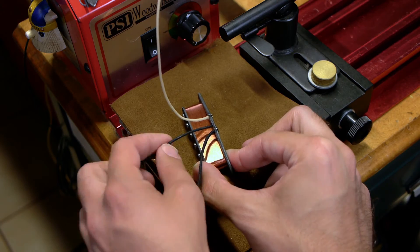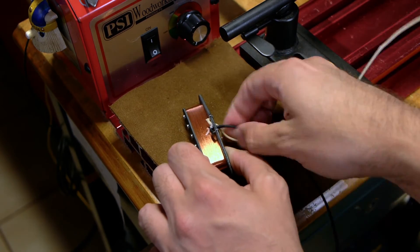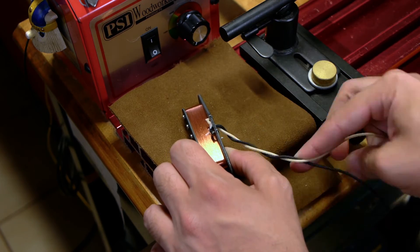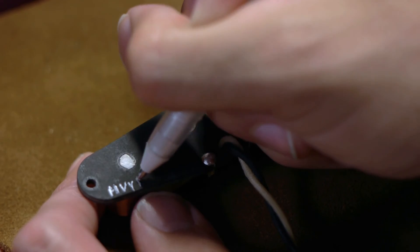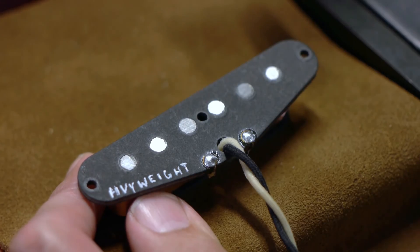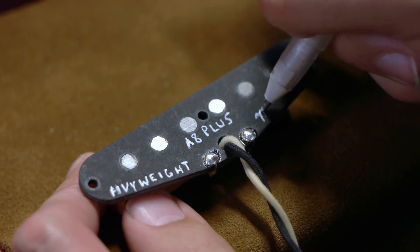With the soldering completed, feed the hookup wires through the hole in the bottom flatwork, pull them taut, and twist them together. Now the pickup is ready to label and sign. I use a number 8 sized Sakura jelly roll pen for black flatwork pickups, and an ultra-fine tip black sharpie for grey flatwork and metal baseplates.